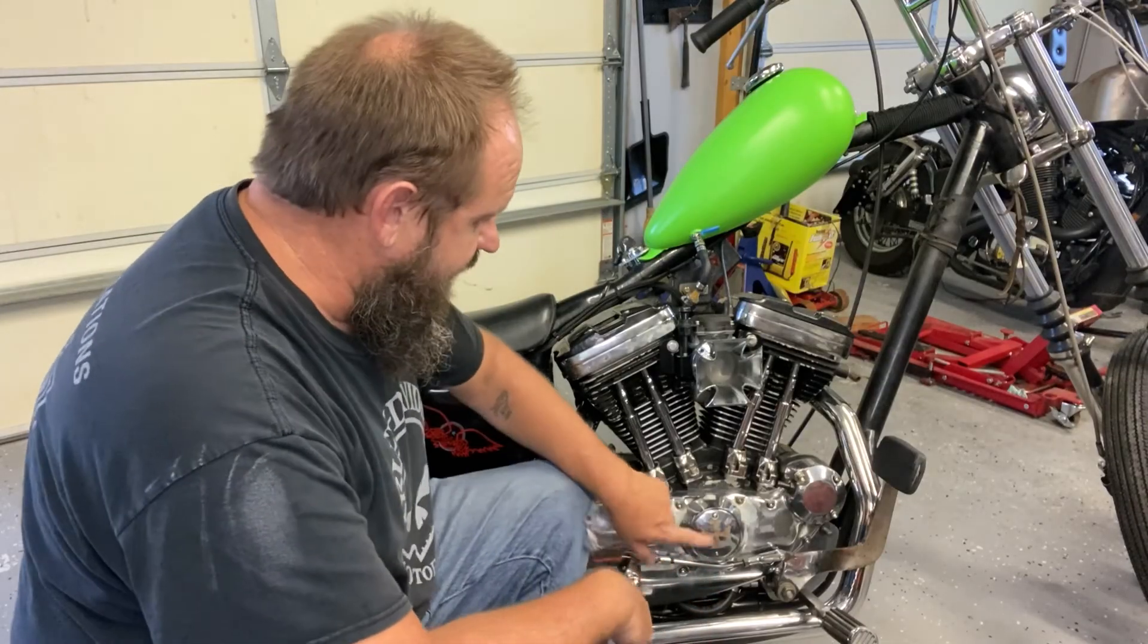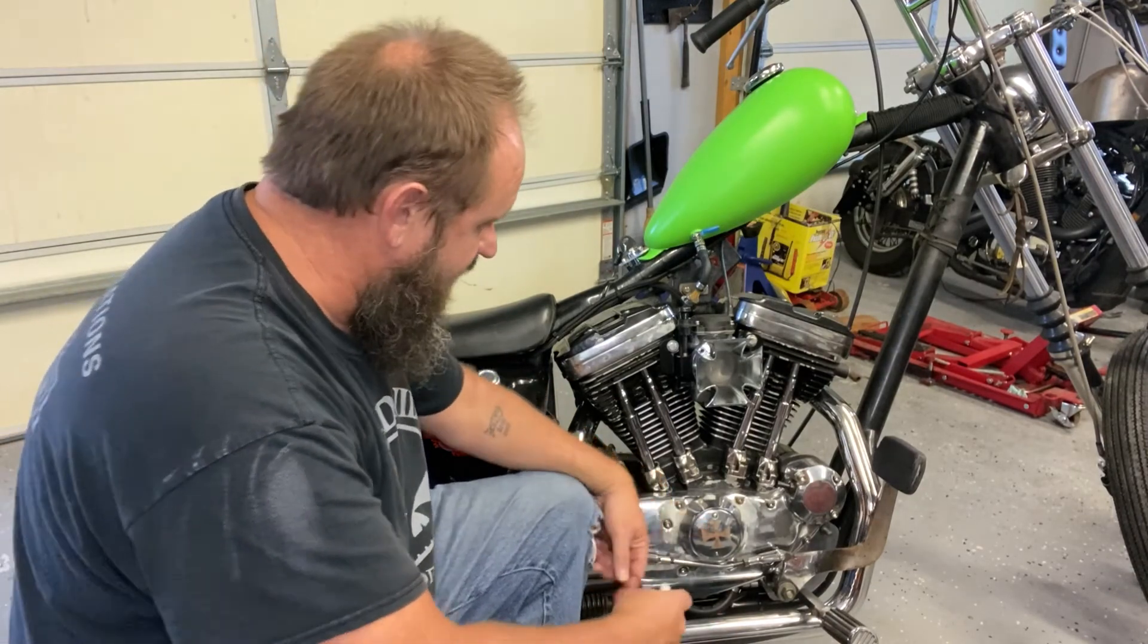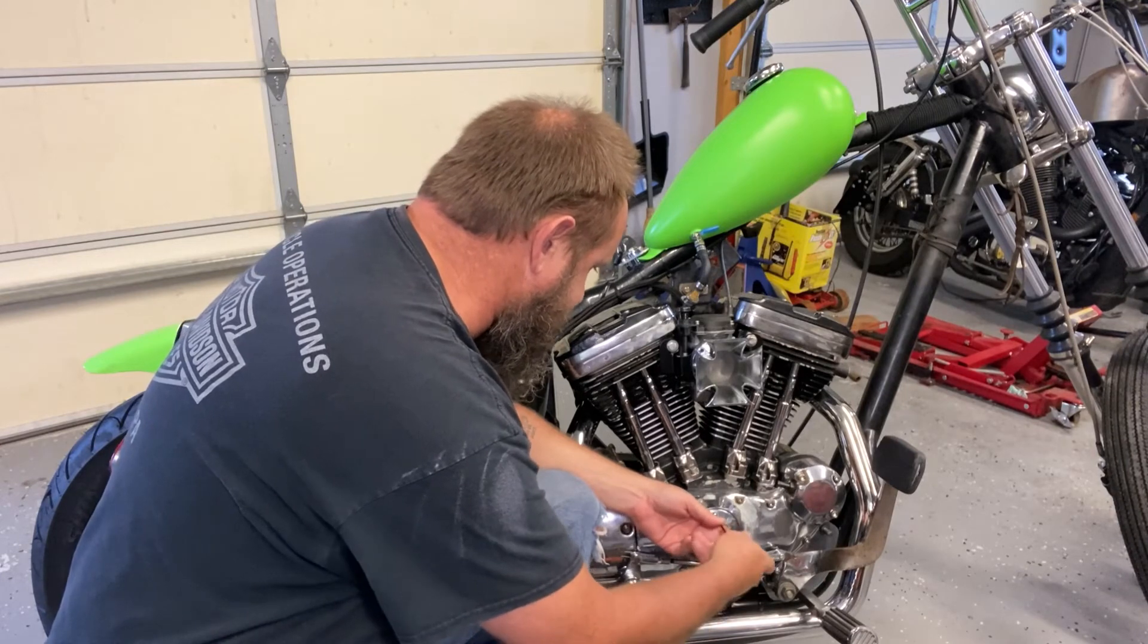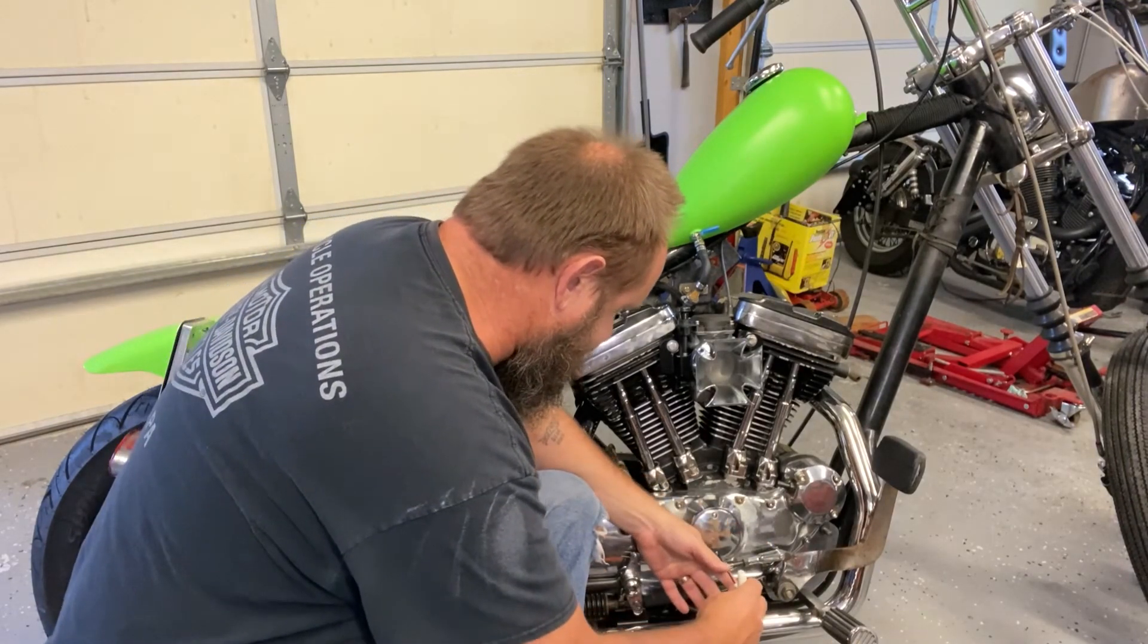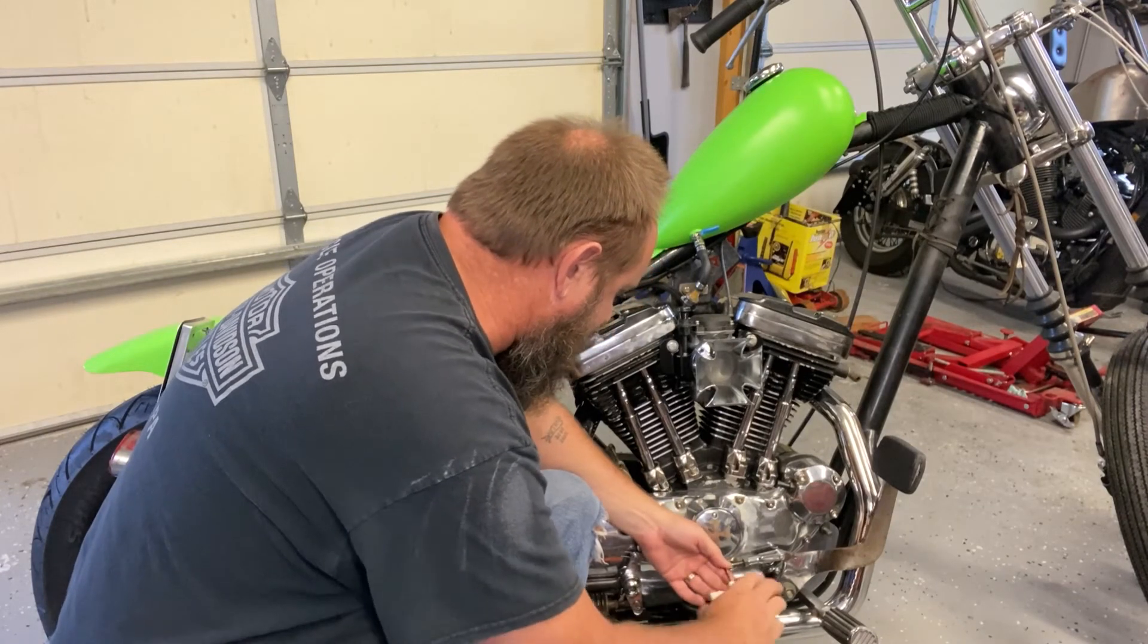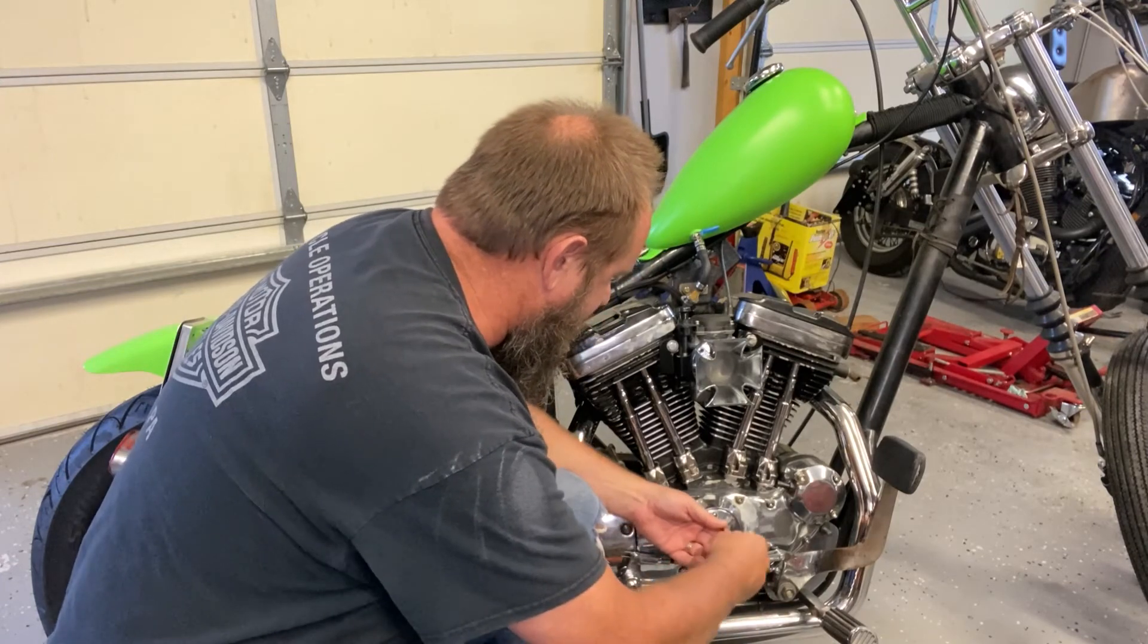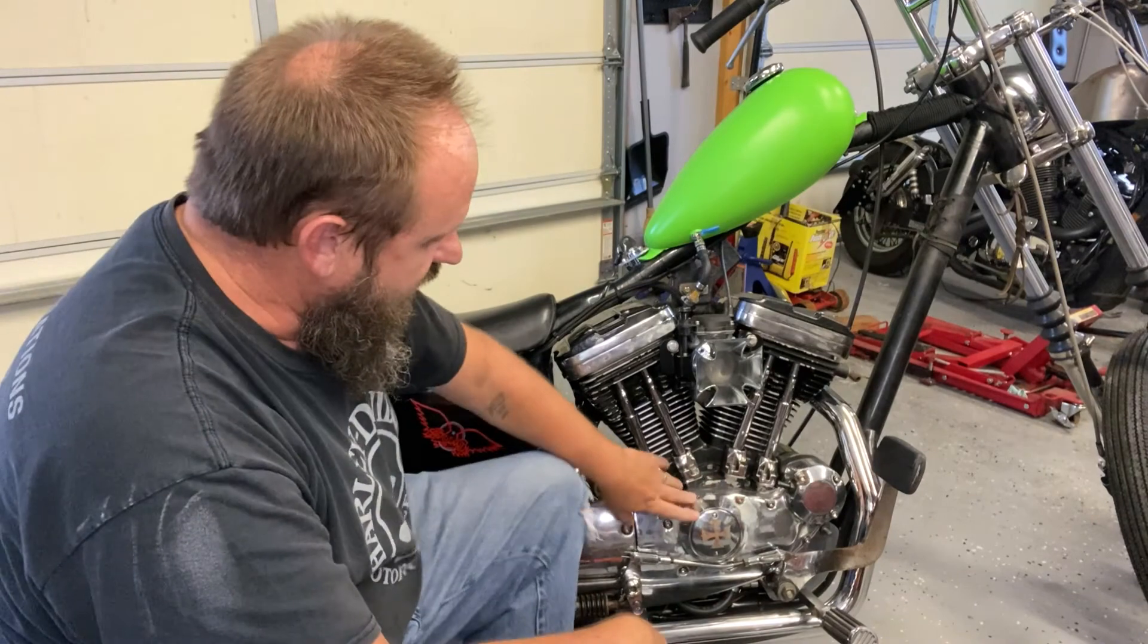So, I'm just mounting the ignition timing cover that we just etched back on the bike. It's just two stainless steel screws. And we'll get those screwed in. I put a drop of blue Loctite on each of them. I also replaced the gasket that goes behind the timing cover.